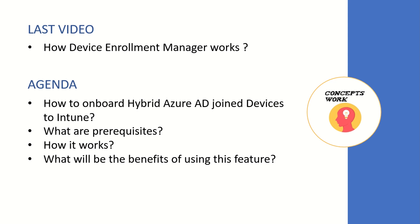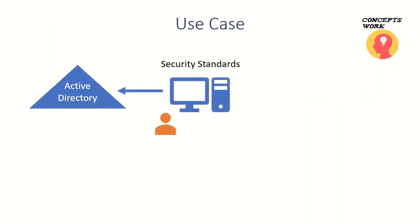Before you go ahead and make any change, it's very important to understand whether a specific feature is going to solve any problem or not. So let's proceed by understanding a typical use case. Six months back, every machine the user was using was a domain joined machine, and they were coming to the office. In order to adhere to security and hardening standards of your enterprise, you were creating Group Policy Objects and deploying them to these machines.